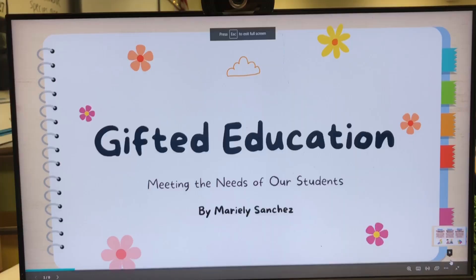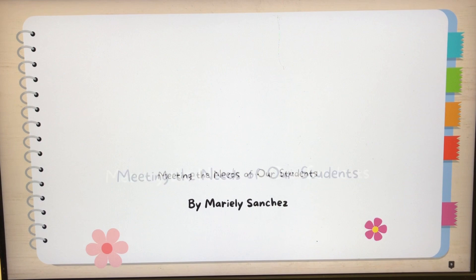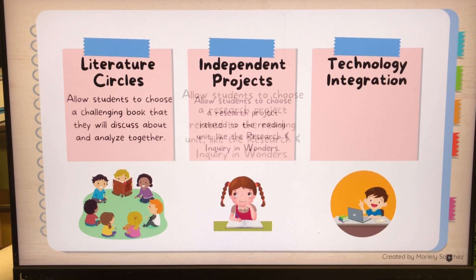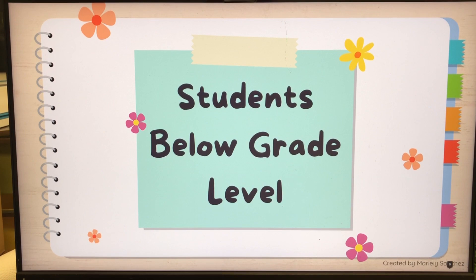I came up with different slides that I made on Canva. Here is the presentation — 'Gifted Education: Meeting the Needs of Our Students.' I started with how to meet the needs of students that are above grade level: literature circles, independent projects, and technology integration. Then the needs of students who are below grade level in reading: small group instruction, differentiated materials, visual aids, and organizers.